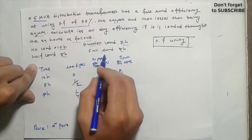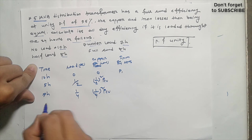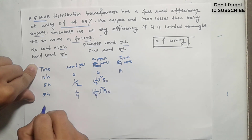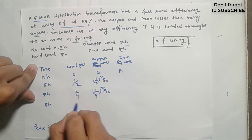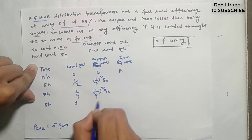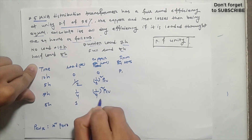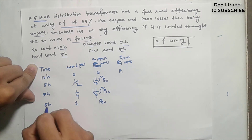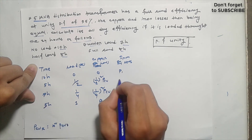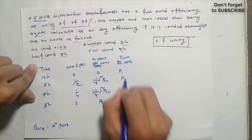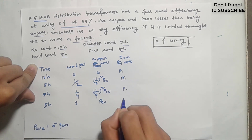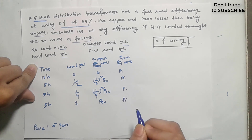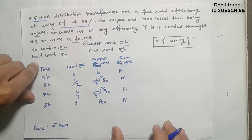We have to add the full load copper loss — that means at load fraction equal to 1. Then we add the full load copper loss similarly. Note that the iron loss is fixed throughout all load conditions.